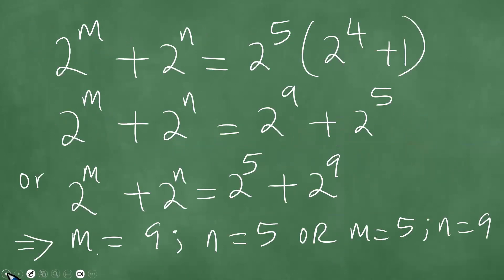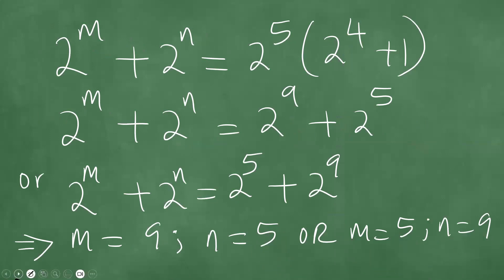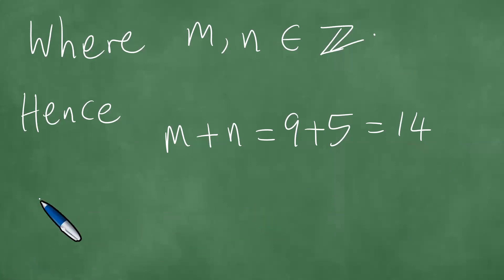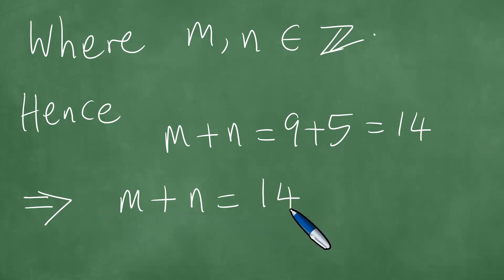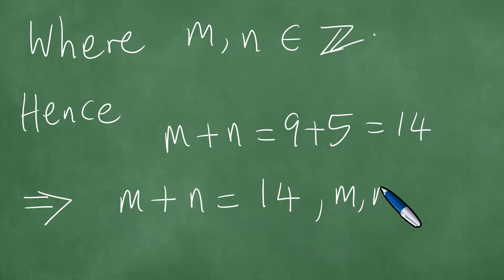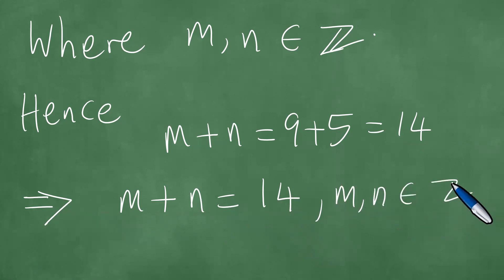In both cases, we have 9 plus 5 which is 14, or 5 plus 9 which is 14. This implies that M plus N is equal to 14, where M and N are integers.